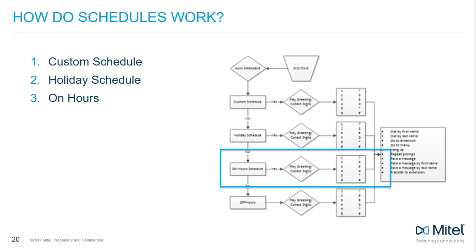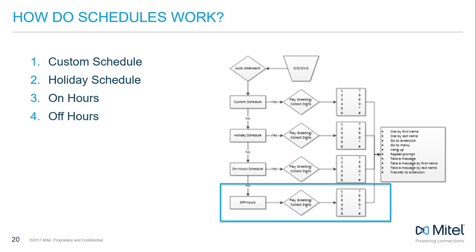On-hour schedules can be broken into multiple time ranges on a certain day or a continuous block. For example, if your business hours are 9 a.m. to 5 p.m., anything outside of those schedules is considered off-hours. Let's review programming these schedules in depth.